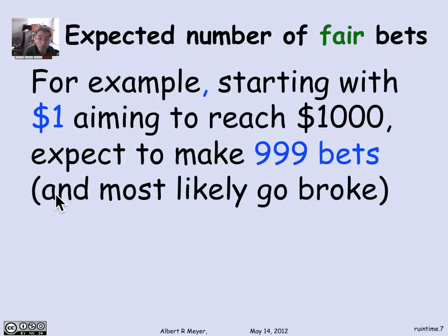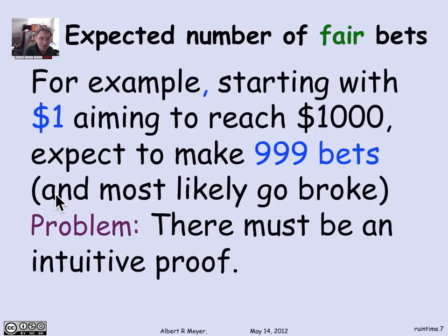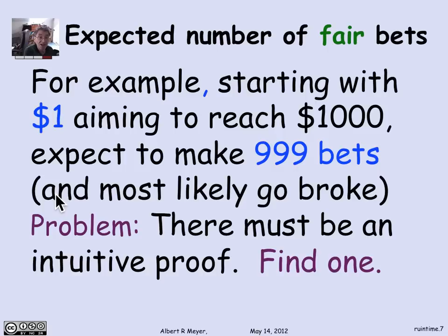Of course, you're almost surely going to go broke, because the probability of reaching your target of $1,000 when you start with $1 is only 1 in 1,000. But it's going to take a long time for you to almost surely go broke. This is a very elegant and intuitive result for summarizing the expected time. There's got to be an intuitive proof other than cranking through a linear recurrence with a double root — I haven't found one, and I leave that as a problem for you to work on.